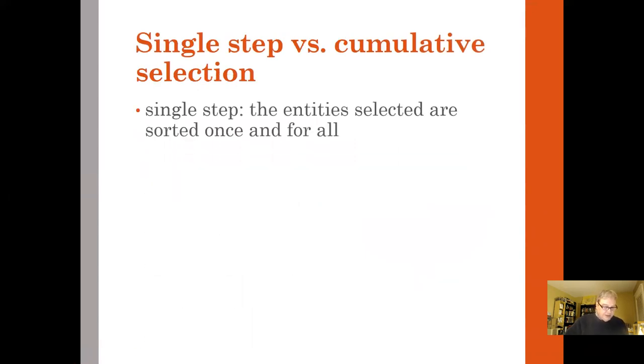Now in step-by-step selection, the entities selected are sorted once and for all. So this is his example of if you gave a monkey a typewriter and gave it some enormous amount of time, it would take much too long for a monkey to come up with some Shakespeare. Maybe eventually it would, but you're looking for a single step kind of selection with this.